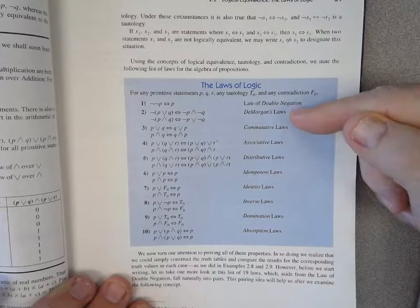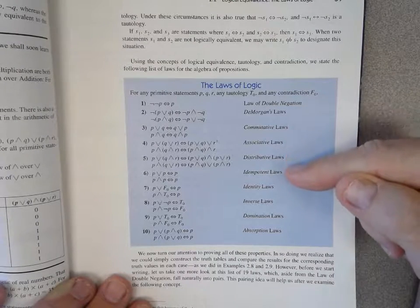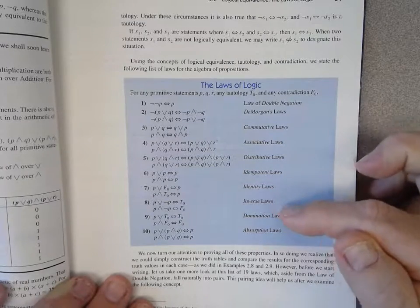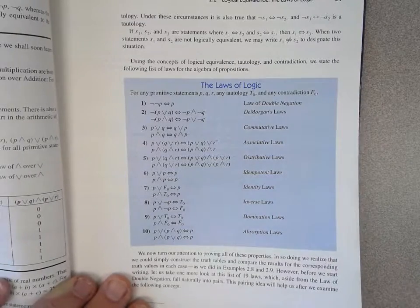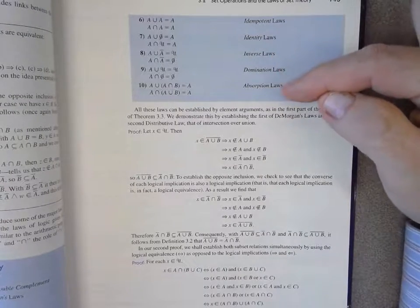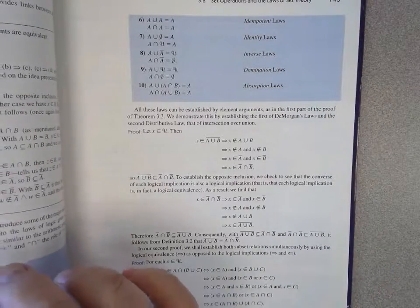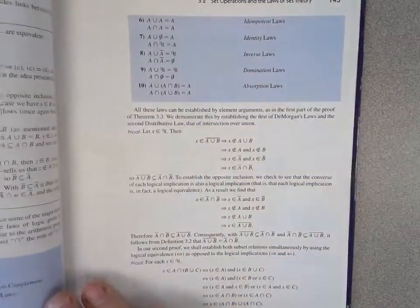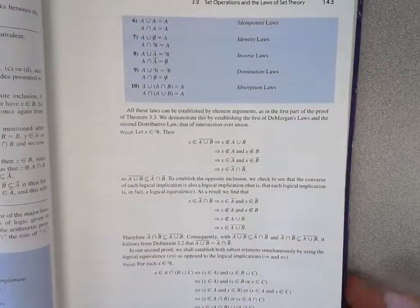And then the textbook has been real good to list all of these in the exact same order. Identity, inverse, domination, absorption. Identity, inverse, domination, absorption. So you see the strong connection between the laws of logic and the laws of set theory.